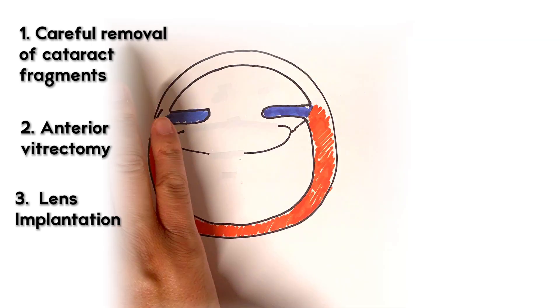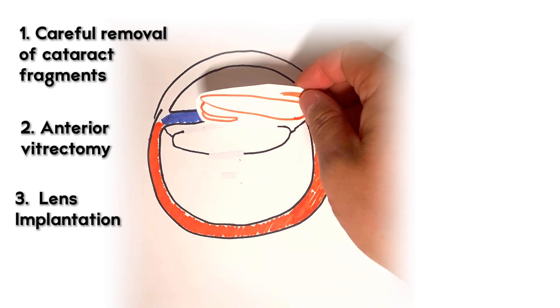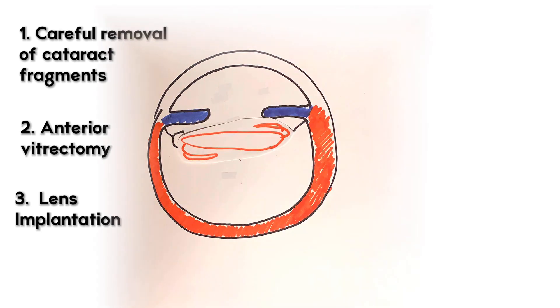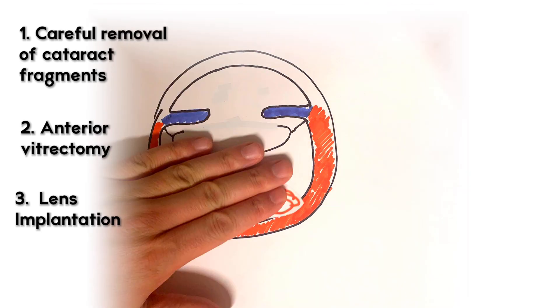For cases where the capsule has been compromised to a larger degree and a sulcus lens cannot be safely placed, then an anterior lens implant in front of the iris or a posterior lens implant behind the iris can be used.